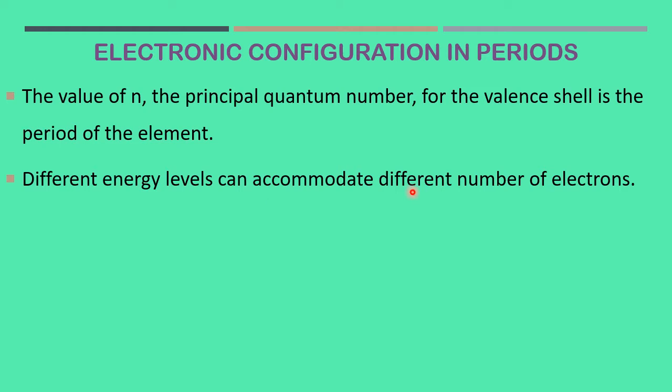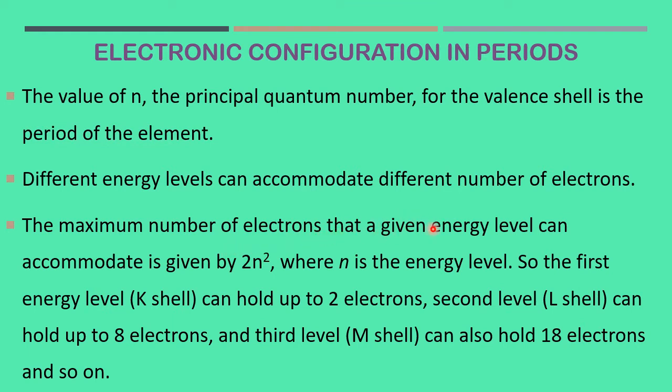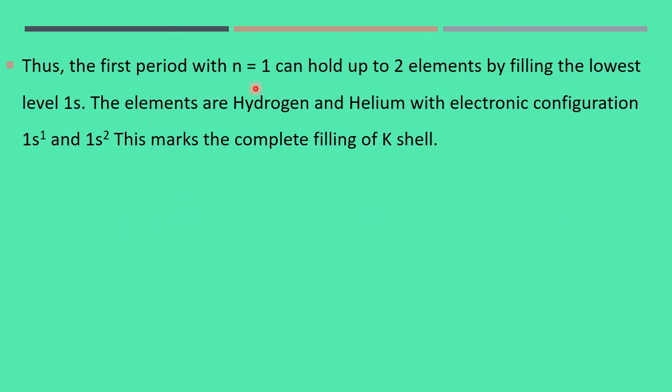Different energy levels can accommodate different numbers of electrons. The maximum number of electrons that a given energy level can accommodate is given by 2N². Thus the first period with N equal to 1 can hold up to 2 elements by filling the lowest level 1s. The elements are hydrogen and helium with electronic configuration 1s1 and 1s2 respectively. This marks the complete filling of K shell because K shell can accommodate only 2 electrons.